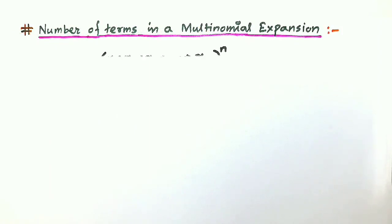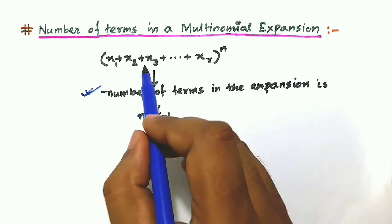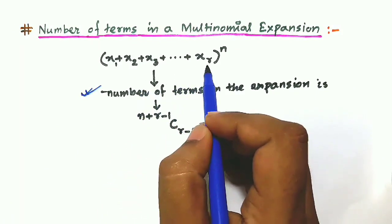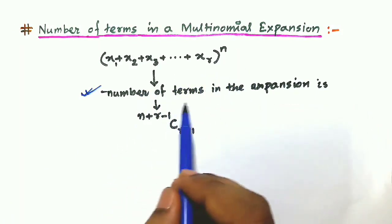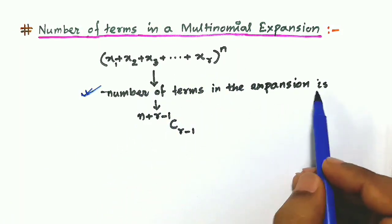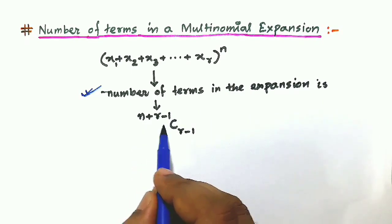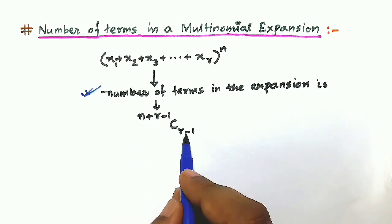The number of terms in a multinomial expansion of (x₁ + x₂ + x₃ + ... + xᵣ)ⁿ is given by the formula n+r-1 C r-1.